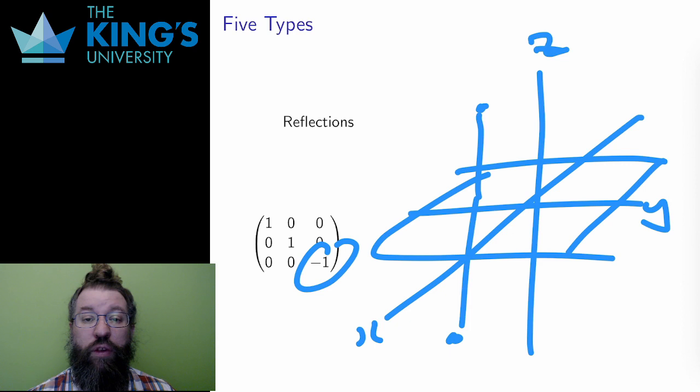This is a reflection over the xy plane, the plane that includes the x and y axes. Everything above that plane moves below it, and vice versa.